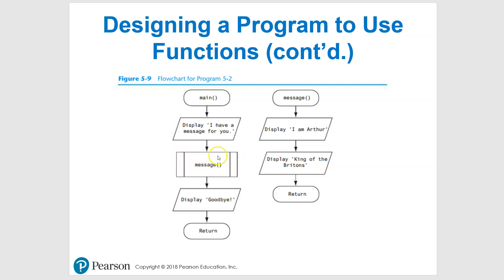Here we go, the rectangle with vertical lines. So when it gets to this point, boom, it's going to run message, drops it in over here. It will run this, return comes back here and finishes here. So that's just an example of a flowchart.